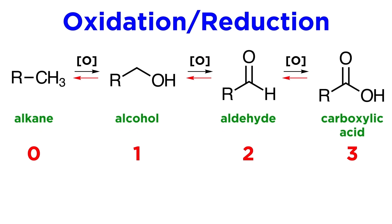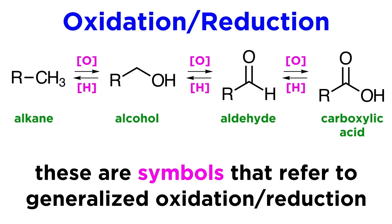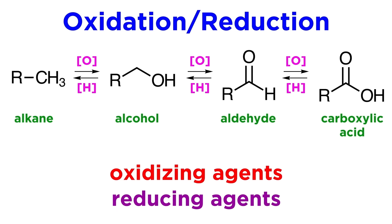Moving to the left, from three back to zero, we are performing successive reduction reactions, and this is represented generically with this letter H in brackets. So when we see these symbols, we are referring to oxidation or reduction in a general way, and we must learn about various oxidizing and reducing agents that will perform specific transformations.